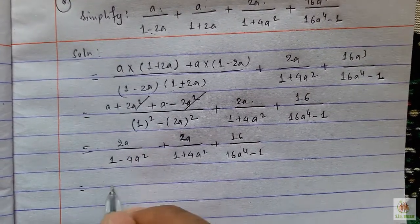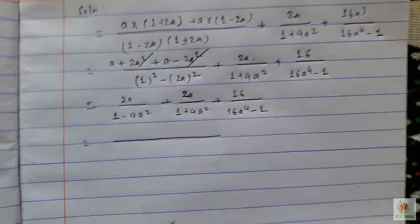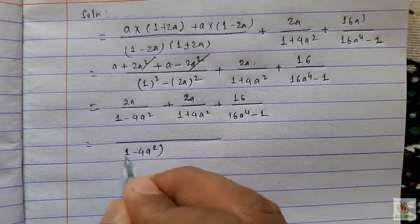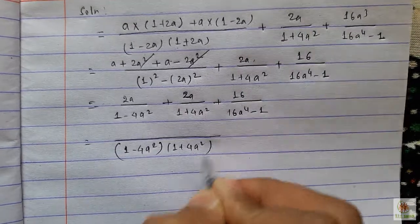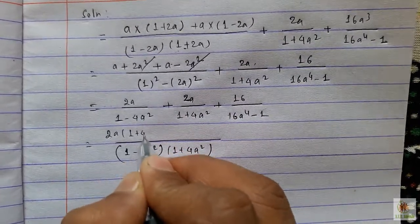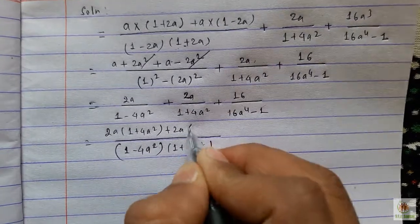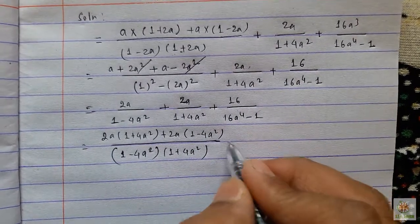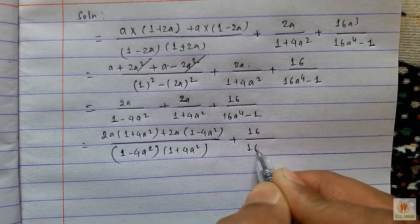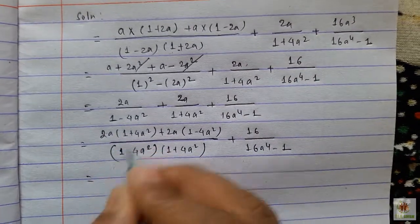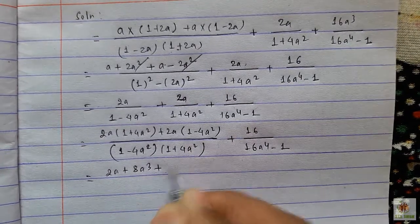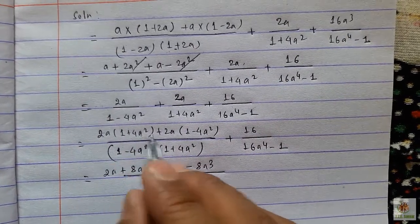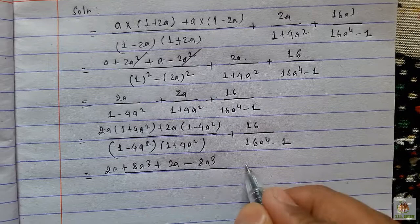Here again we can see (1 minus 4a²) and (1 plus 4a²), so (1 minus 4a²) gives a square, and (1 plus 4a²) multiplied by (1 plus 4a²) gives a square. So 2a into 2a, and 2a into 4a² gives 4 to the 8a — the process is the same for this.